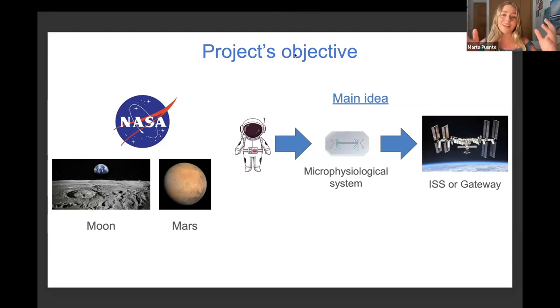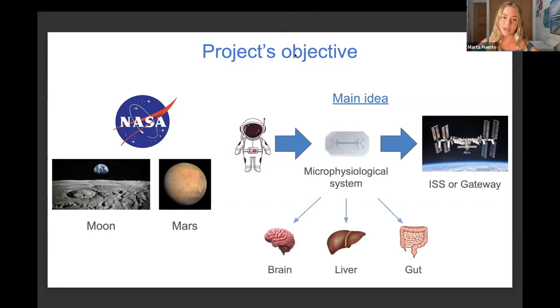Our final goal is to recreate a whole astronaut, a chip that represents all major human organs connected between them. The thing is that this is a quite innovative approach, so we are currently focused on three different organs: the brain, the liver, and the gut.